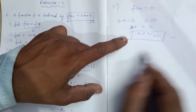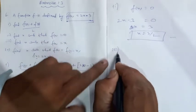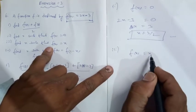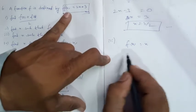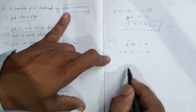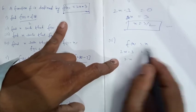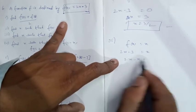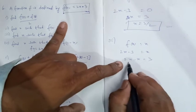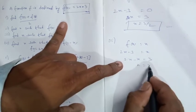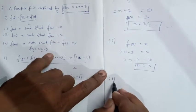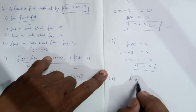Part 3: f(x) = x. Substitute: 2x minus 3 = x, so 2x minus x = 3, giving x = 3. That's all.